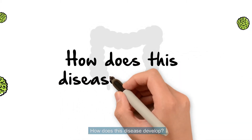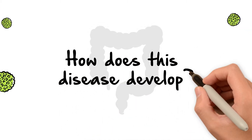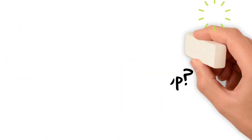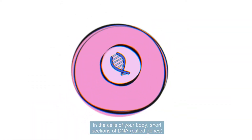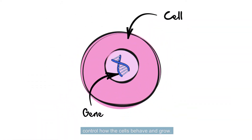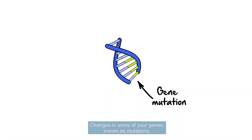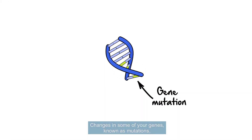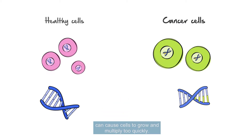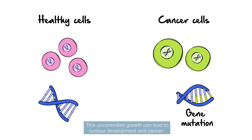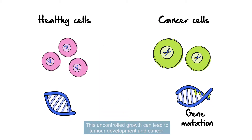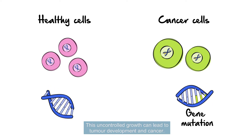How does this disease develop? In the cells of your body, short sections of DNA, called genes, control how the cells behave and grow. Changes in some of your genes, known as mutations, can cause cells to grow and multiply too quickly. This uncontrolled growth can lead to tumour development and cancer.